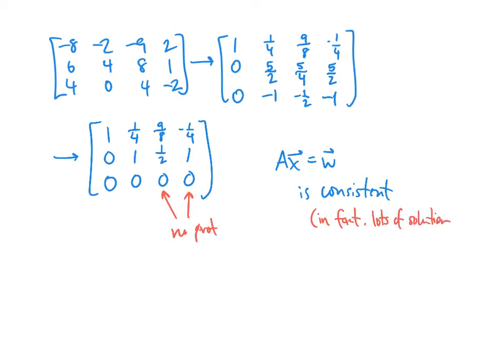Remember, the question here is not what is the solution, but is there a solution. So the conclusion is that W is in the column space of A — it is a linear combination of the columns of A. Now if we wanted more information, if we wanted to know specifically in what way it's a linear combination and what the coefficients would be, we could answer that by continuing to reduce this matrix. But if the question is just yes or no — is this a linear combination of the columns — we've answered that question.